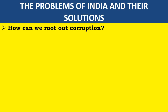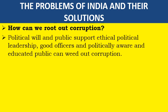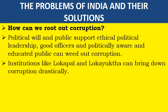How can we root out corruption? Political will and public support, ethical political leadership, good offices, and politically aware and educated people can weed out corruption. Institutions like Lokpal and Lokayukta can bring down corruption drastically. Education institutions can educate people against corruption.